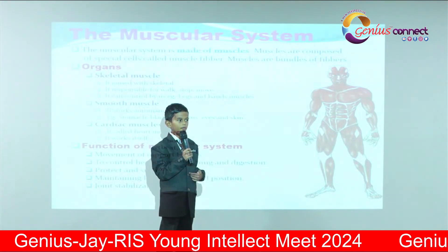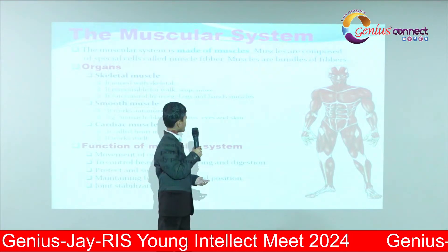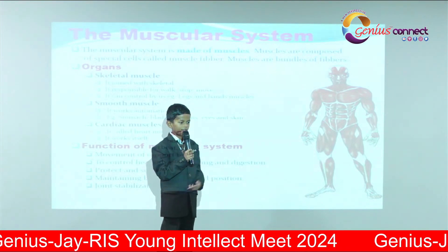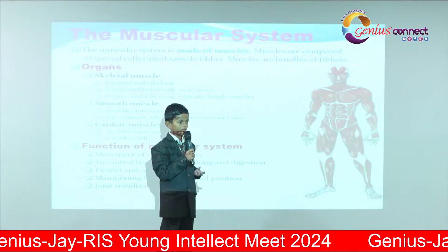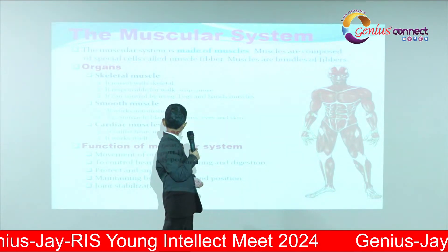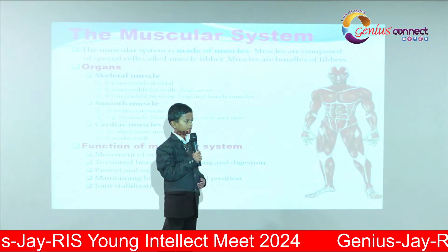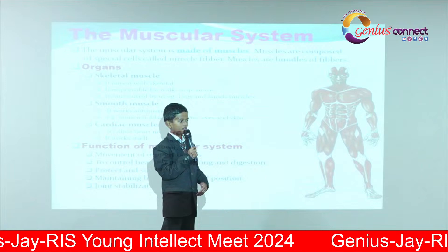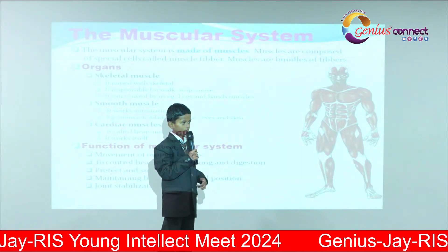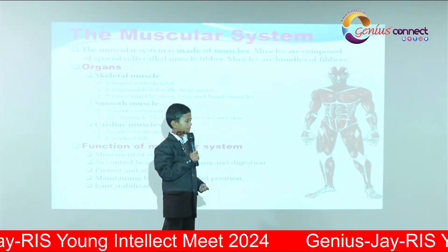Skeletal muscles are controlled by us. For example, hands and leg muscles. Smooth muscles work automatically. Examples include the stomach, bladder, ureters, eyes, and skin.